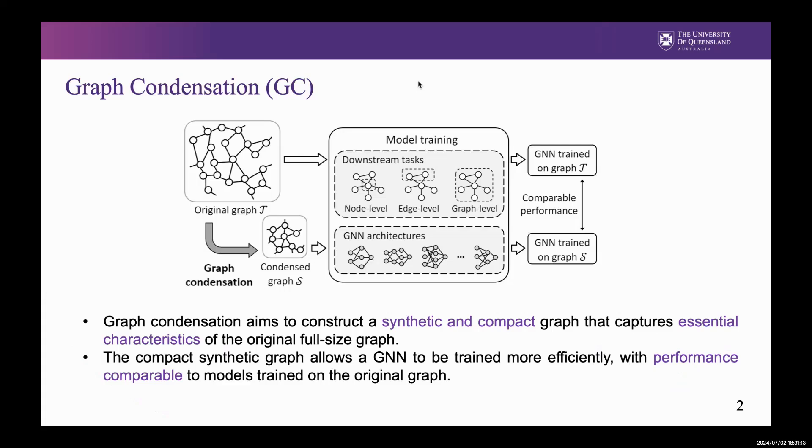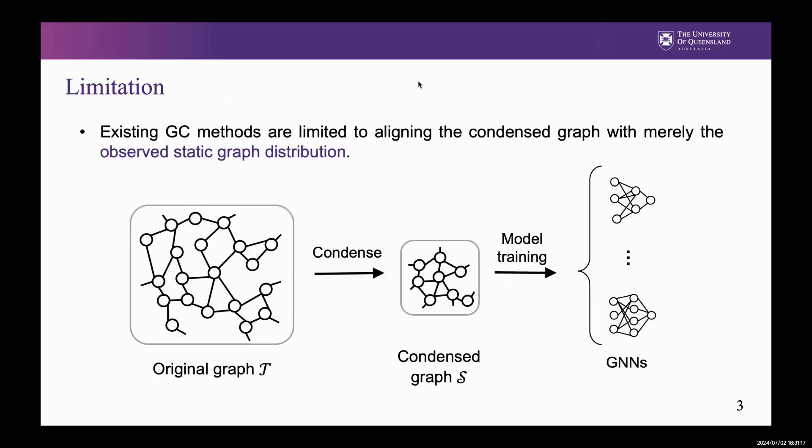Graph condensation is a data-centric solution for GNN training acceleration. By default, GC methods are under a static setting.